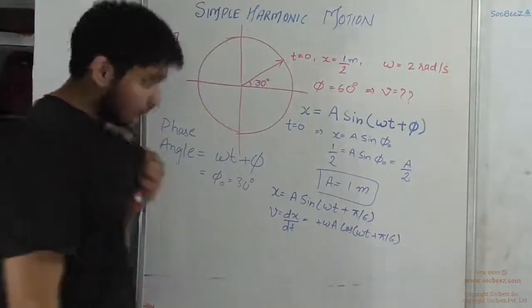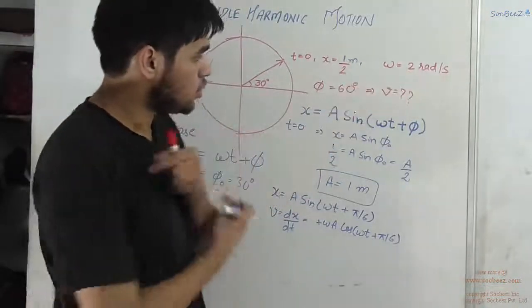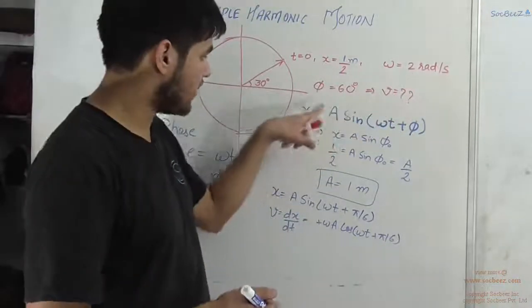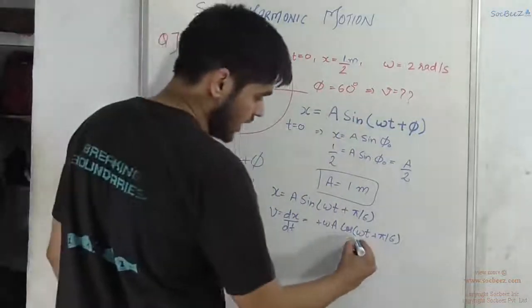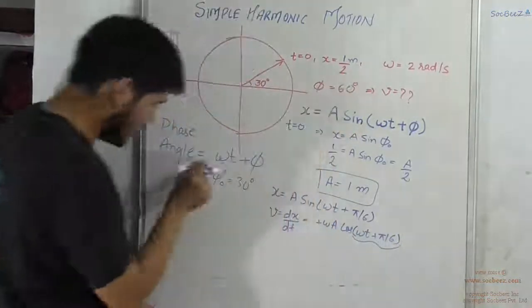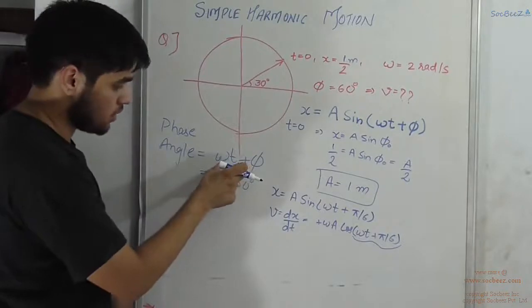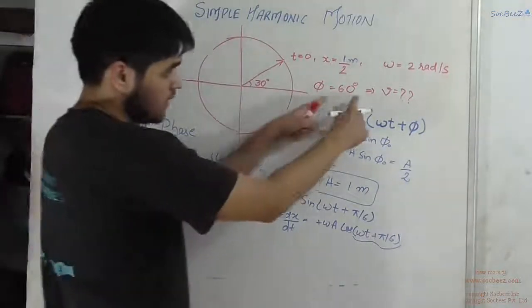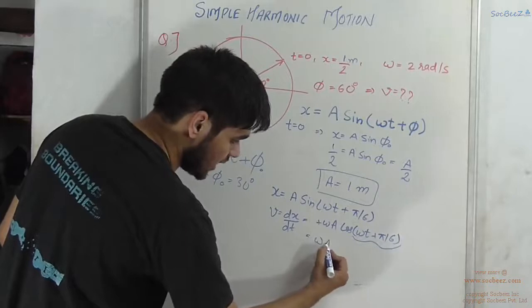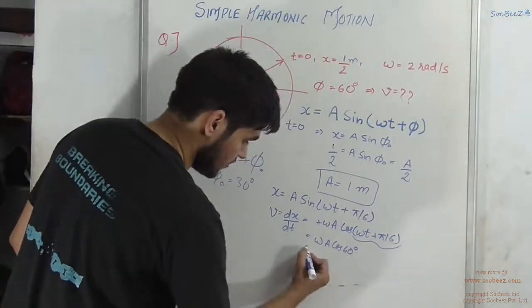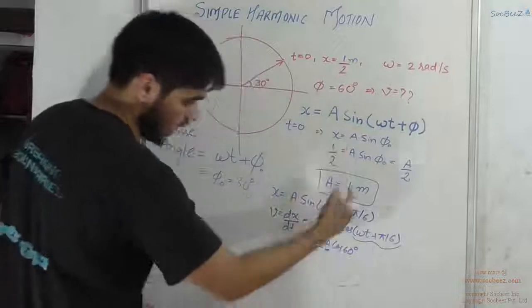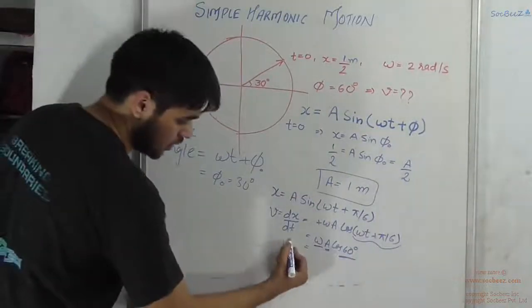Omega is given as 2 rad/s. Since the total phase angle phi = 60° is given directly, we substitute it into the velocity expression: v = omega × a × cos(60°). Substituting omega = 2, a = 1, and cos 60° = 1/2, we can calculate the value of velocity directly.